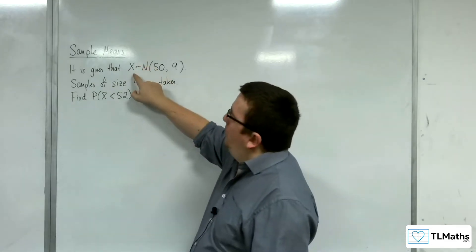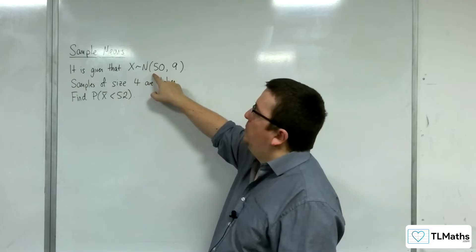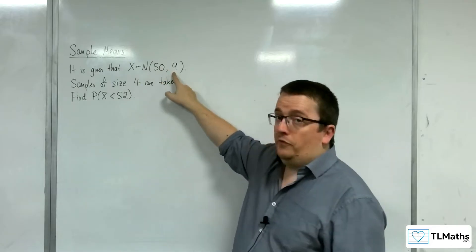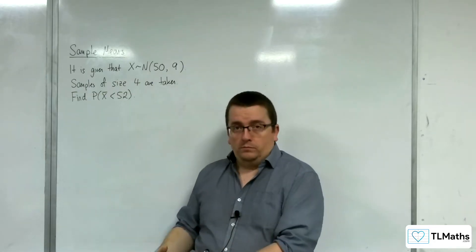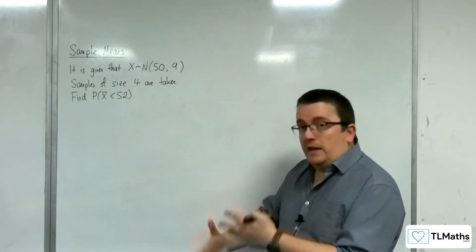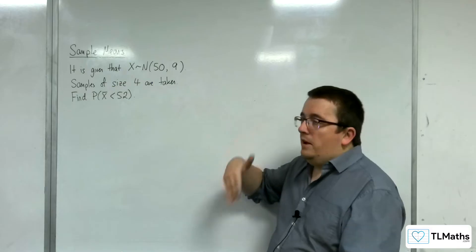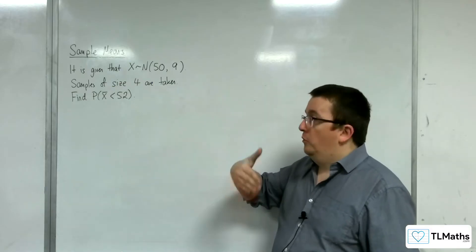So, what we have is a population that is normally distributed with a mean of 50 and a variance of 9. I'm going to take samples of size 4, and find the mean of each of those, and then they are going to be distributed normally.